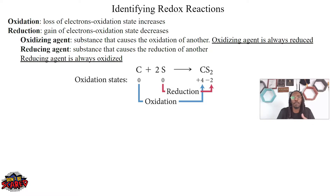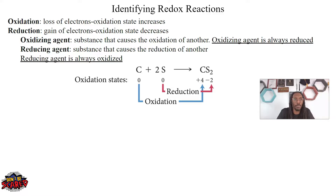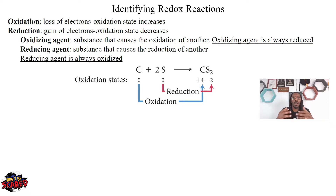Check out that previous video talking about redox reactions specifically. Another way to think about oxidation or reduction is to think about oxidation states, because now we know oxidation states and how to identify them. With oxidation, we're losing electrons, which means our oxidation state will increase. And if we're looking at reduction, we're gaining electrons, so our oxidation state will decrease.